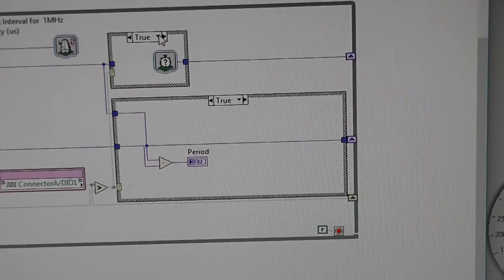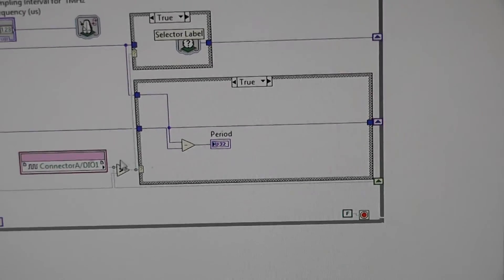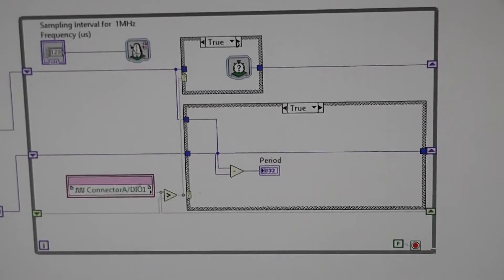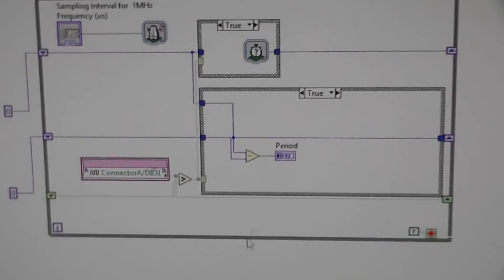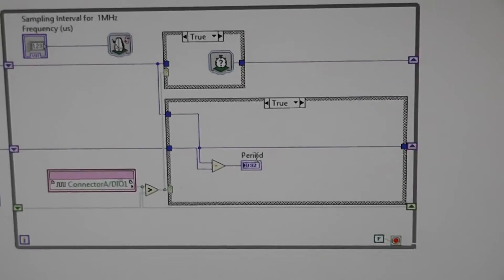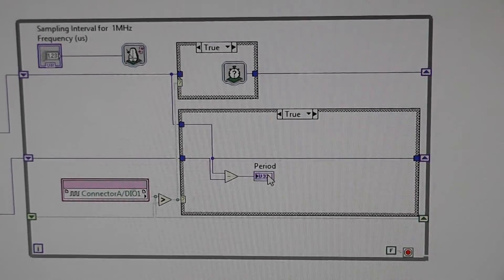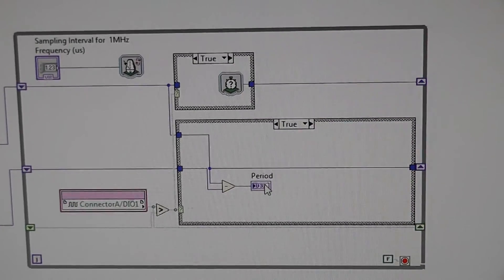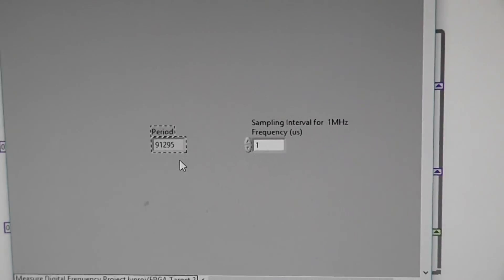And it sets a timer just on the positive going edge. And when it finds the next edge, it then calculates the period of the waveform. Once it's found the period of the waveform, it displays it here on the screen.